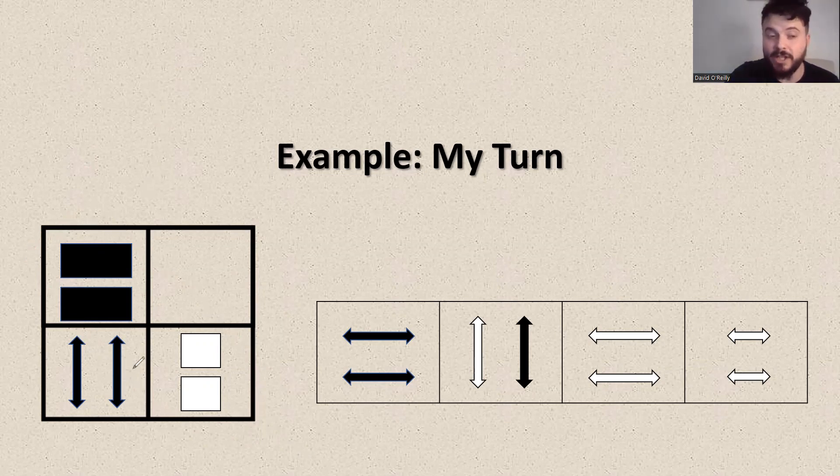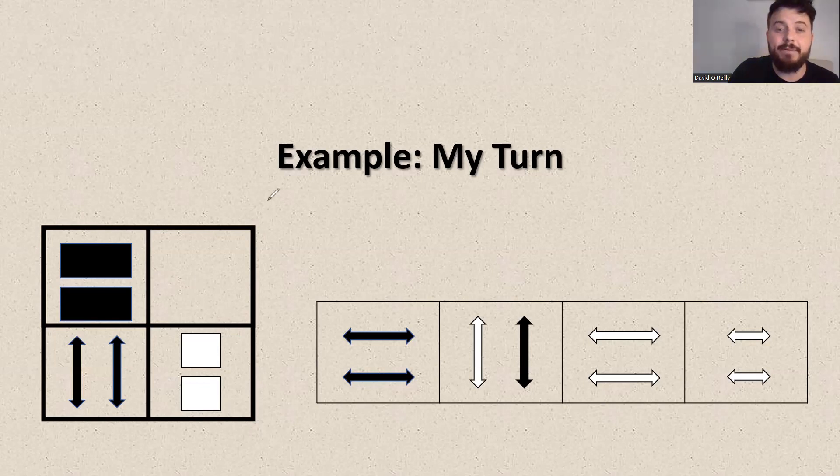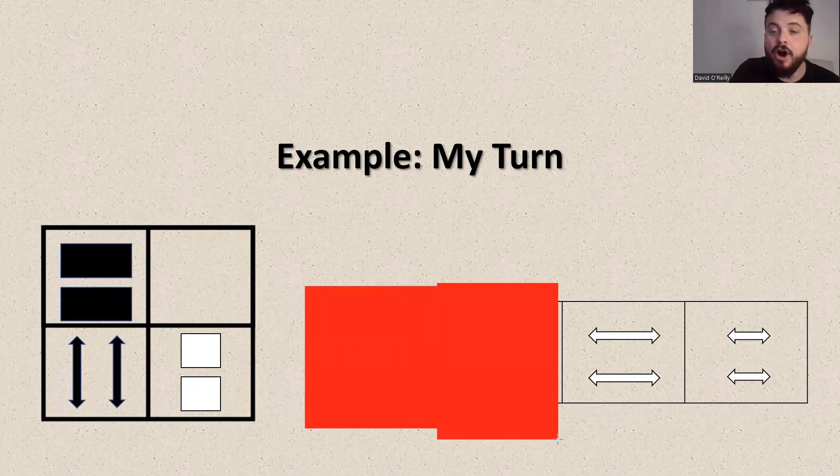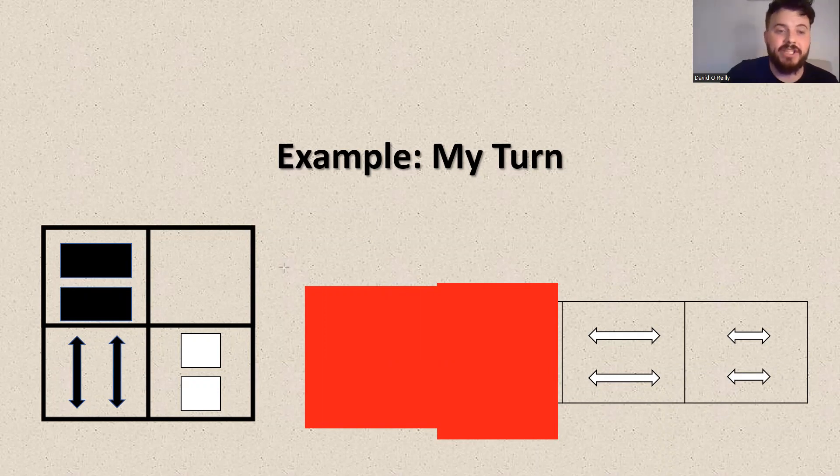Now, if I look at my question, the object of the question, the arrows here, these are currently black. And we know that the pattern at the moment is going from black to white. So these arrows need to be white in this missing space. So that means I can already eliminate this option and this option. I can't eliminate the other two because they are both white arrows.